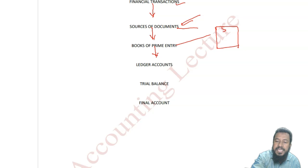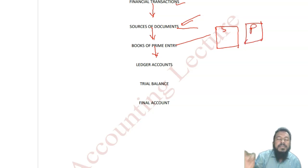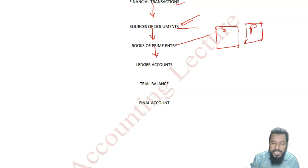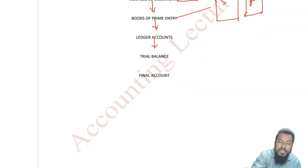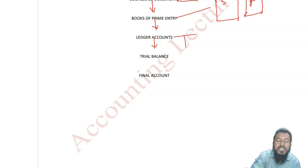It could be a sales day book. It could be a purchases day book. Sales return, purchase return, cash book, petty cash book. From the day books, you transfer the information into T accounts. We call it ledger accounts or T accounts — double entry.